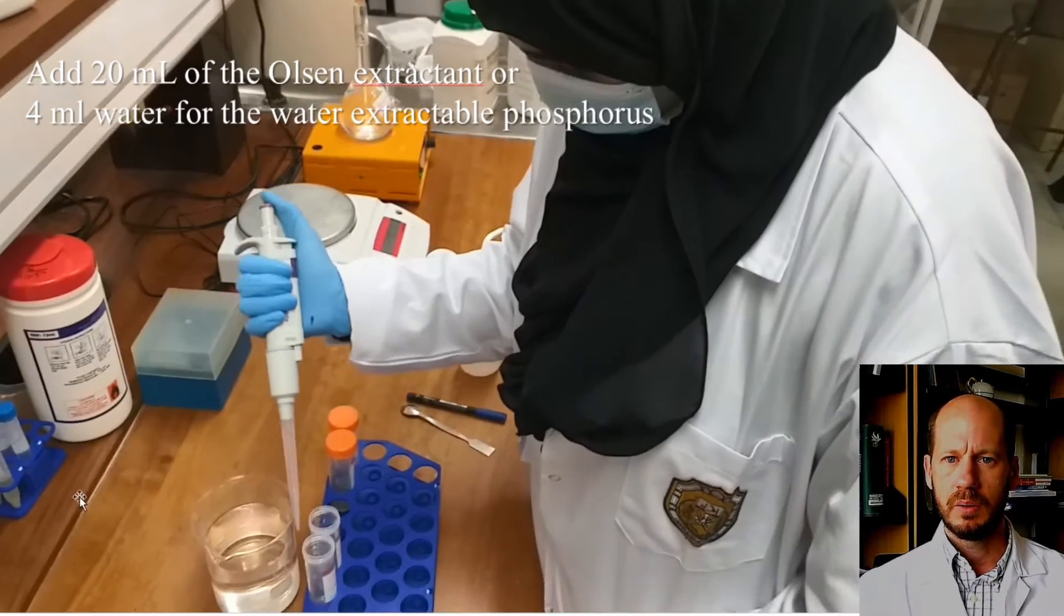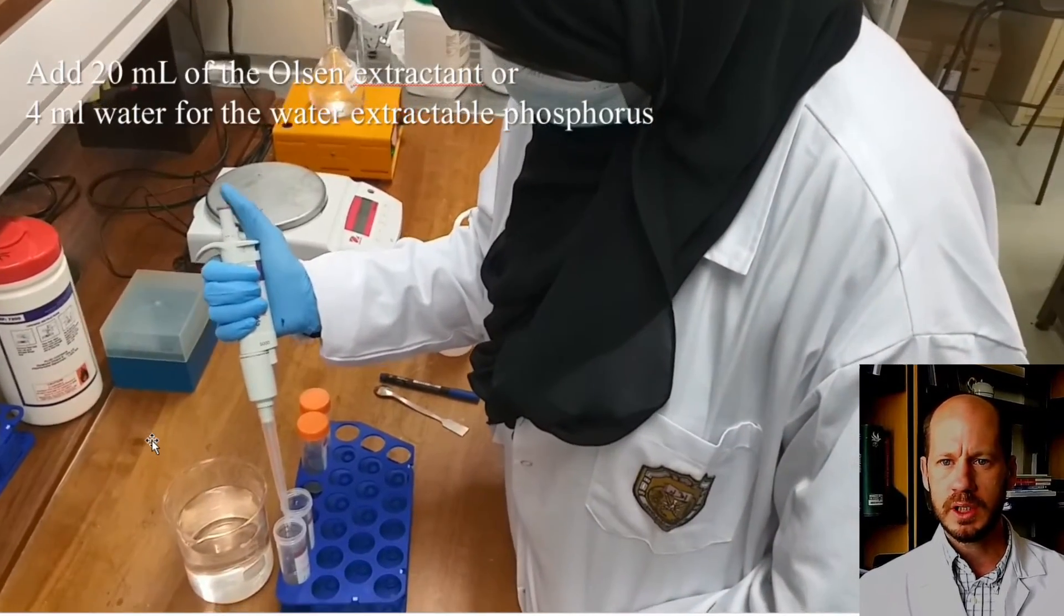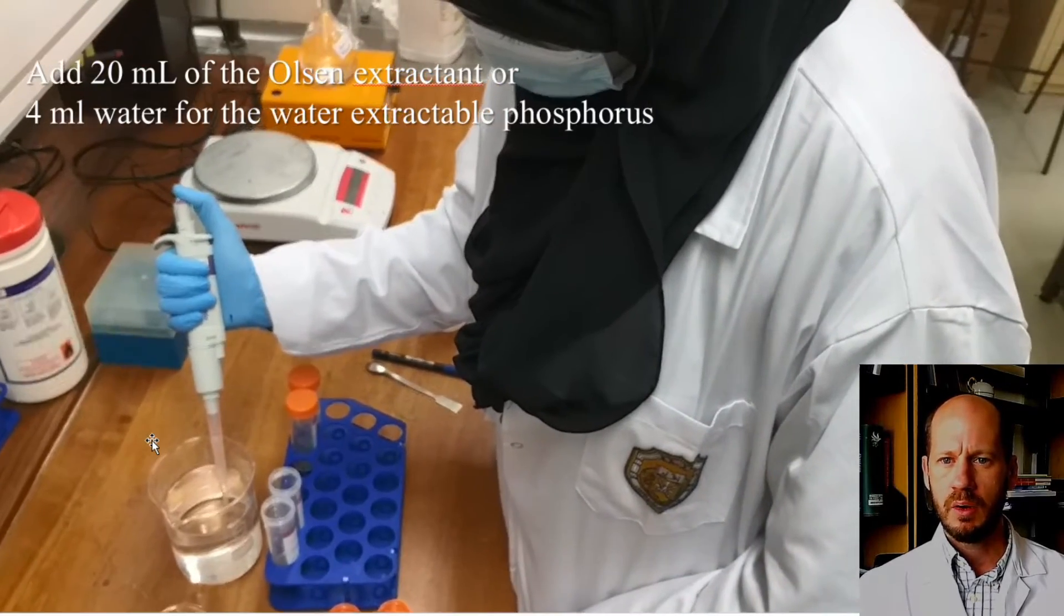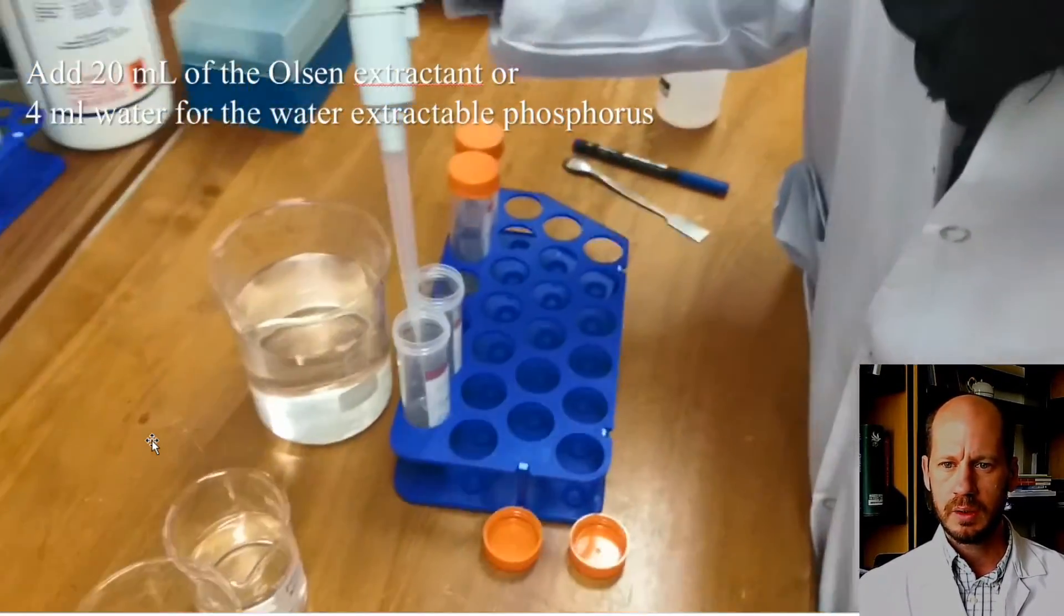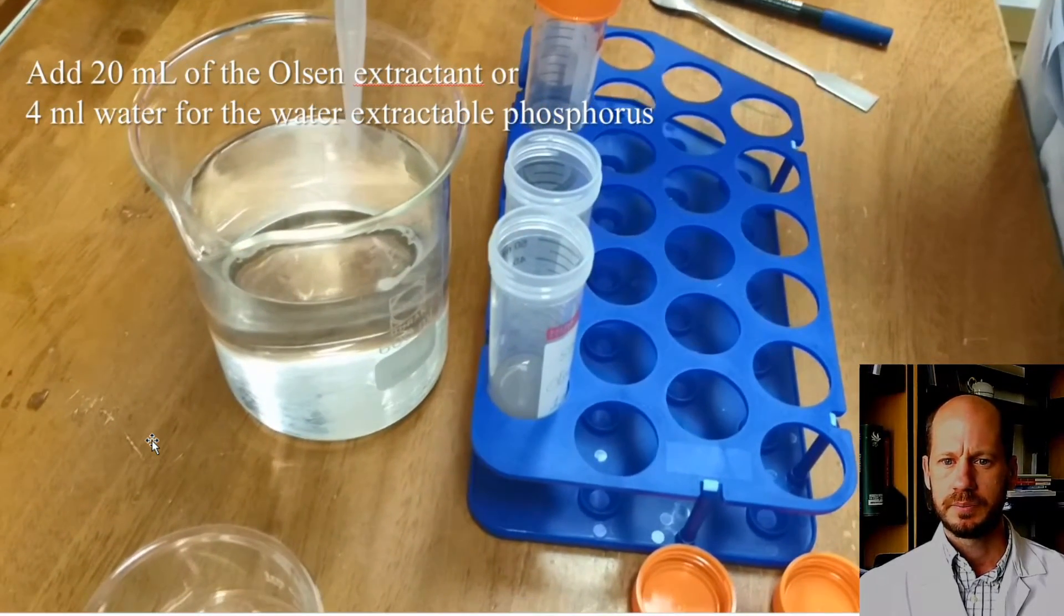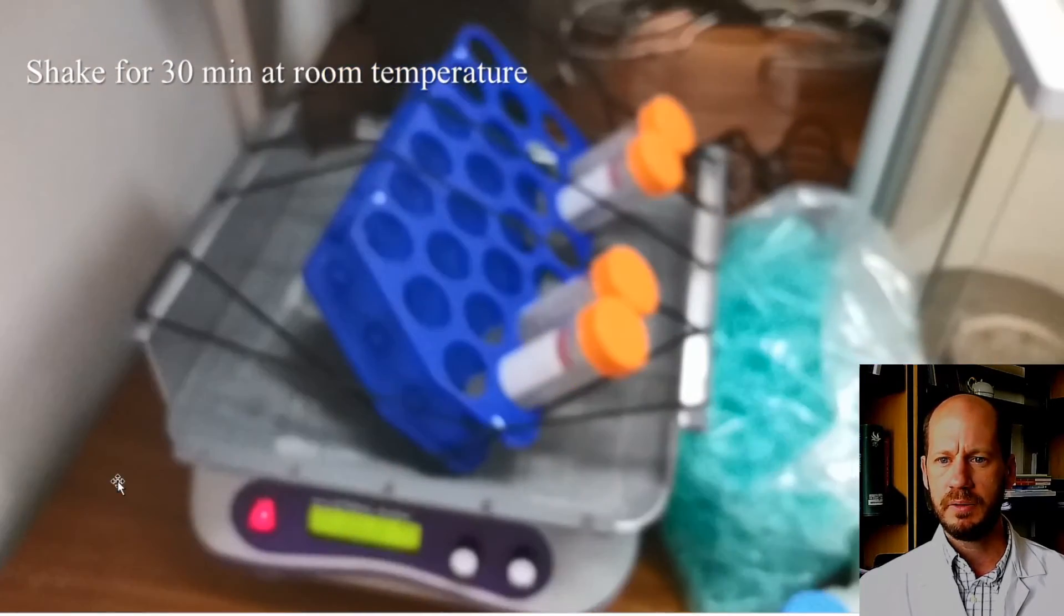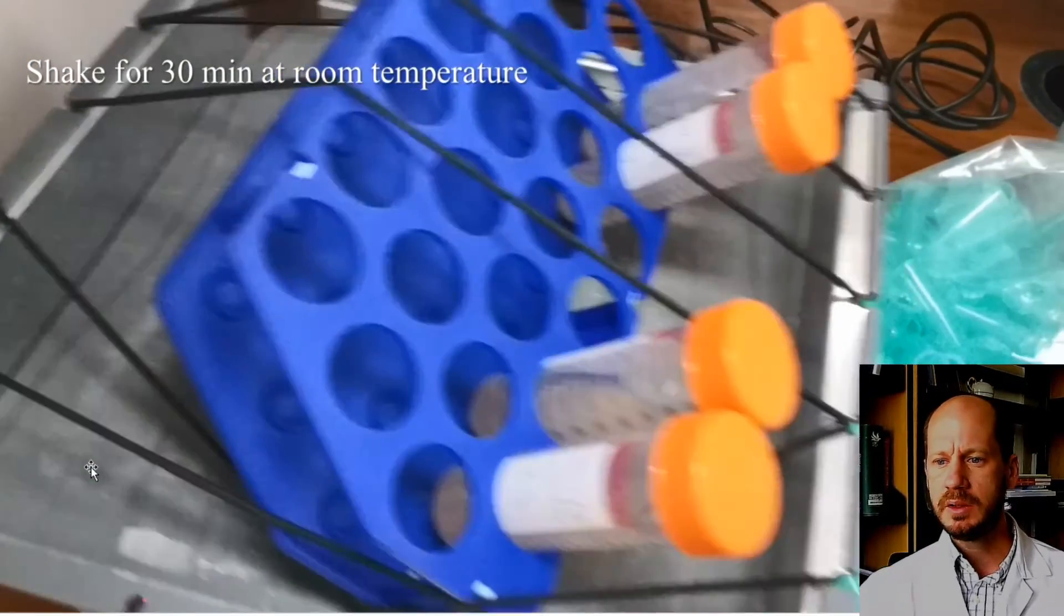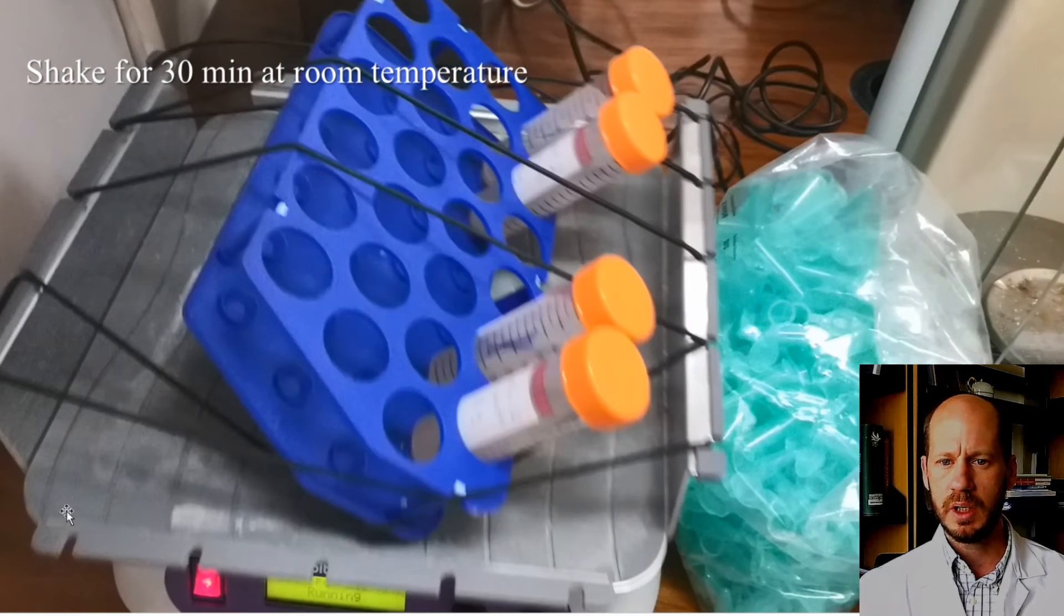Now we're adding 20 ml of the Olsen extractant to the soil, or 4 ml of water to the ones where we extract water-soluble phosphorus. After that, we're going to shake it for half an hour. This is the shaker in the lab at room temperature. If you have an incubator, you can shake this in the incubator at 100 rpm.